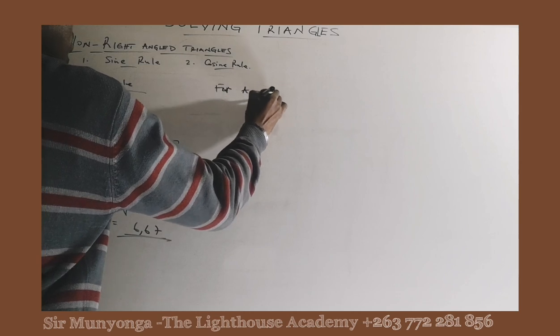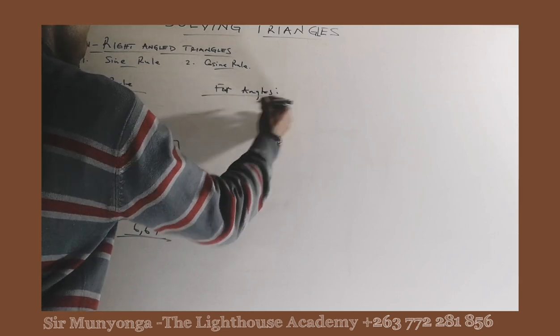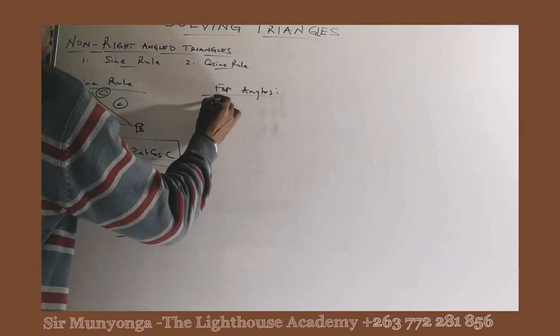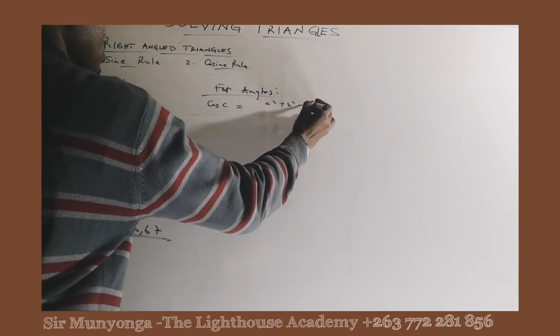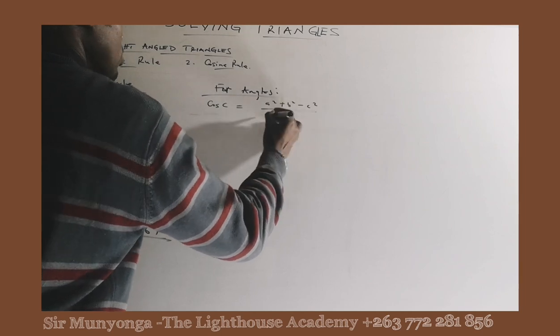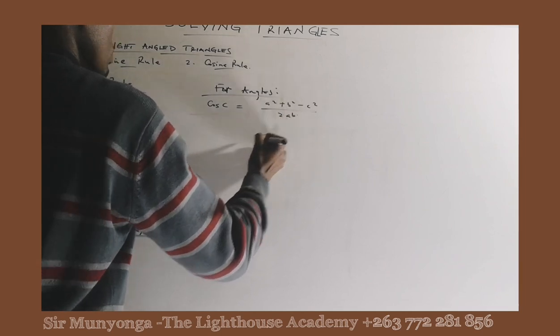Cosine rule for angles. We change the subject of formula. Then you will get cos C is equal to A squared plus B squared minus C squared over 2AB.